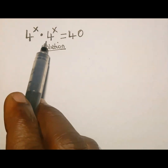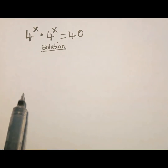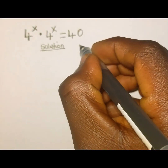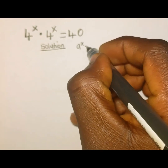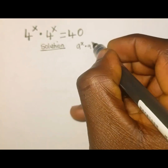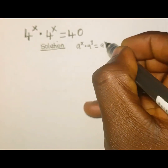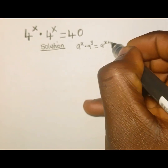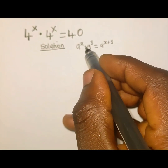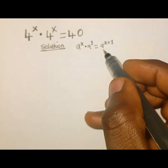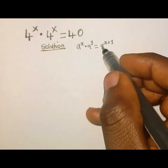The first thing we are going to recall is the multiplication property of indices. When we have a raised to the power of x multiplied by a raised to the power of y, this is the same as a raised to the power of x plus y. Because when the bases are the same and there is multiplication, just write one of the bases and add the powers.